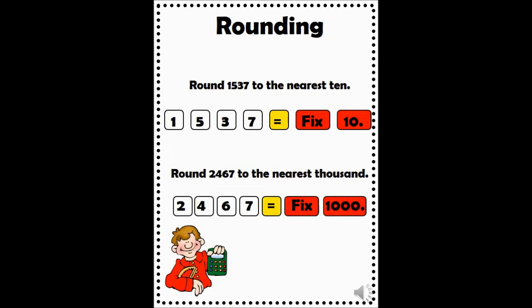Before rounding the next number, press the yellow button at the top right of your calculator, labeled clear. You should notice that even when pressing clear, the word fix is still at the top of your display screen. This means that any future calculations done in your calculator will be rounded to the nearest hundred. To fix this, you can do a quick memory clear to erase the rounding function. Now, pause the video to practice rounding the two numbers on the screen. Press play when you are ready to move on.